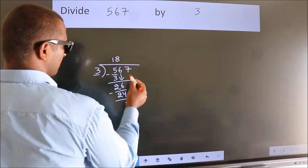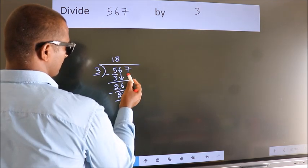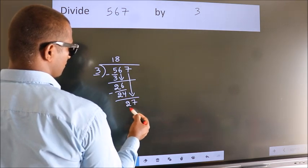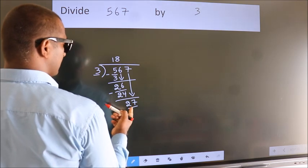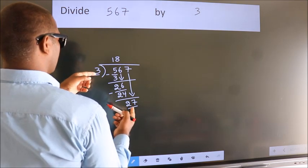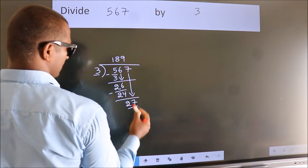After this, bring down the beside number. So, 7 down. So, 27. When do we get 27 in the 3 table? 3 9s 27.